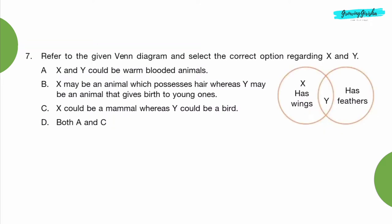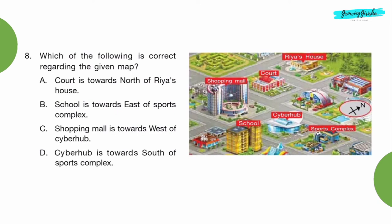Question 7: Refer to the given Venn diagram and select the correct option regarding X and Y. Option D: Both A and C. Question 8: Which of the following is correct regarding the given map? Option C: Shopping mall is towards west of Cyberhub.